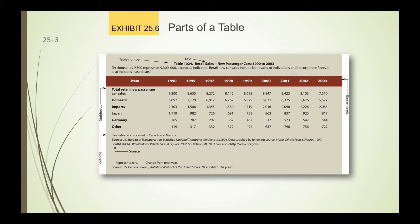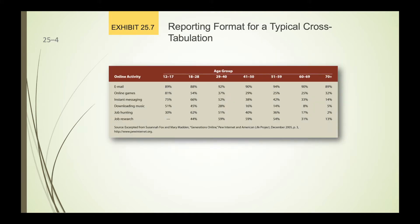There shouldn't be any room for doubt — you should know exactly what you're looking at by the way the table explains the data. Another example shows online activity by age group, from age 12 to 70, with different types of online activity conducted. That gives you a representation of that type of table, and this is a cross-tabulation — you're looking at age group and online activity.